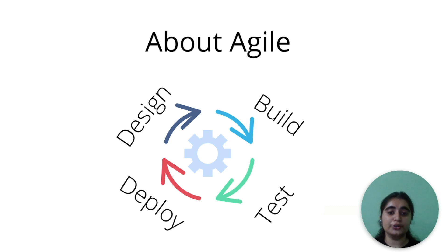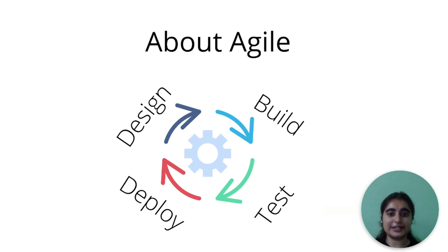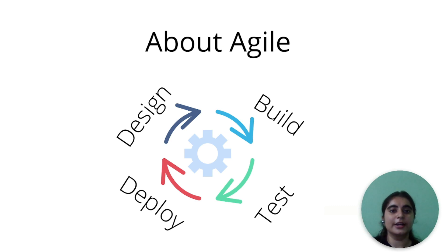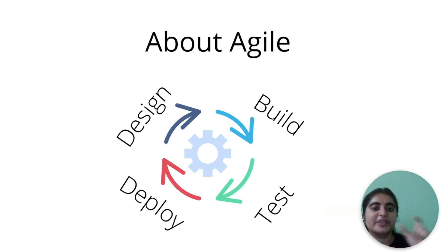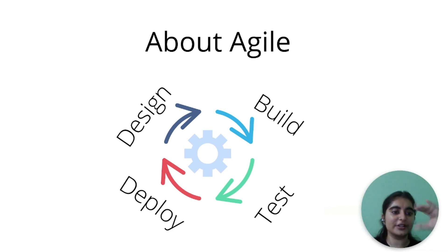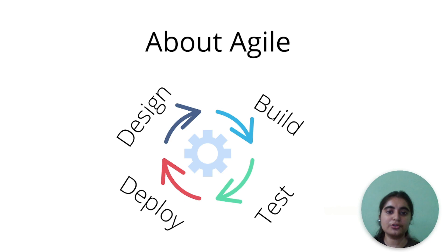In the older waterfall model, if a customer required changes, the organization had to refactor the code from the very beginning. But in agile, at every step you can change, update, test, and deploy. For example, you make a small portion of the design, write code for that small portion, test it, and deploy it. Then you do the same for the next web page — design, build, test, deploy — and so on.